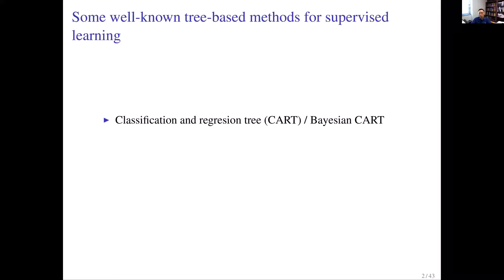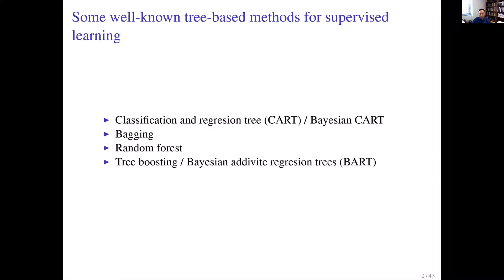There are a number of well-known tree-based methods for supervised learning such as classification and regression. For example, there are single tree methods like CART and Bayesian CART, as well as ensemble methods — bagging, random forest, and additive models like boosting. I'll briefly talk through these starting from CART, giving motivation for why the other methods were proposed, in particular how boosting works and how that motivates our work in the unsupervised setting.